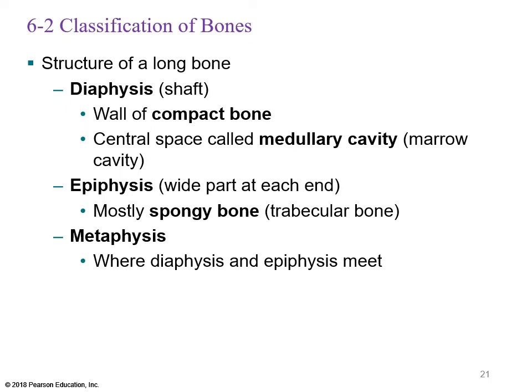The structure of a long bone includes the diaphysis or shaft, whose walls are compact bone, with a central medullary cavity filled with yellow marrow. At the epiphysis — the top and bottom of the bone — you have a superior and inferior (proximal and distal) epiphysis, consisting mostly of spongy bone. The metaphysis is where the diaphysis and epiphysis meet. In growing bone, there are primary growth centers in the middle of the shaft and secondary growth centers in the epiphysis, with cartilage called growth plates.